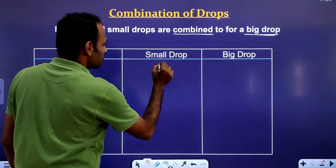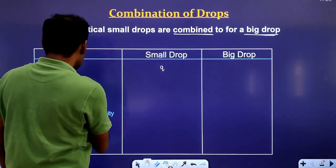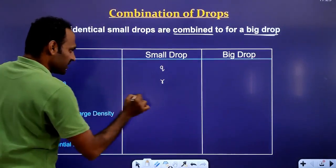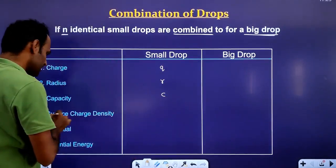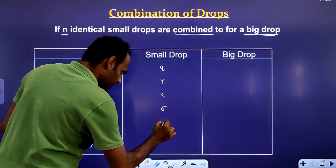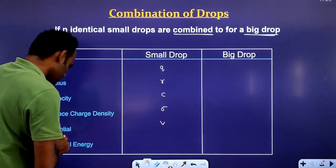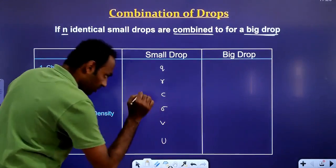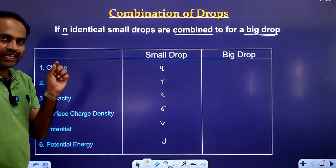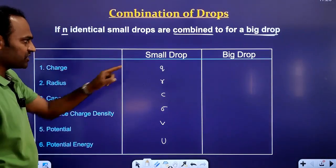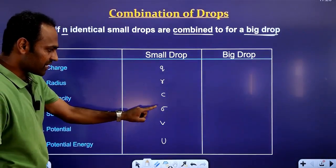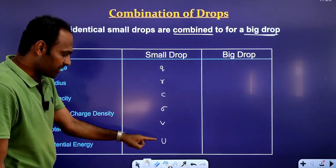Let me say the charge of the small drop is Q, the radius of the small drop is R, capacity is C, surface charge density is sigma, potential is V, and potential energy is U. So each small drop has charge Q, radius R, capacity C, and surface charge density sigma.